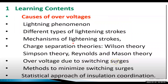These are the different types of learning objectives we have to consider here: causes of overvoltages, lightning phenomena, different types of lightning strokes and the mechanism of lightning strokes, charge separation theories - Wilson theory, Simpson theory, Reynolds and Maussens theory. These theories were explained in the previous lecture. Overvoltage due to switching surges, methods to minimize switching surges, and statistical approach of insulation coordinates.